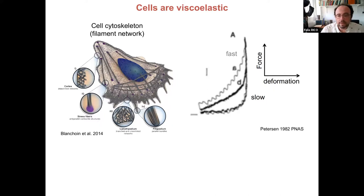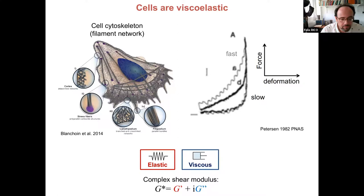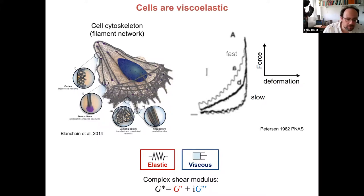If we pull faster, the cell appears stiffer and the hysteresis becomes more obvious, showing the cell behaves like a viscoelastic system. We can describe viscoelasticity with the complex shear modulus, which has an in-phase term describing the elastic component and an out-of-phase term describing the viscous part.